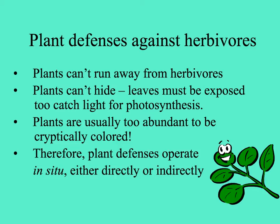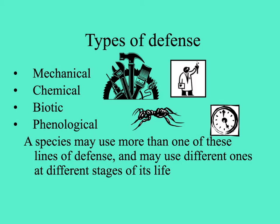Plant defenses have to operate at the site of attack, either directly or indirectly, and we'll look at these many different ways in this lecture. Plant defenses can be divided into four categories: mechanical, chemical, biotic, and phenological. It's important to remember that any plant species may use more than one of these lines of defense — maybe even all of them — and may use different ones at different times of its life history.